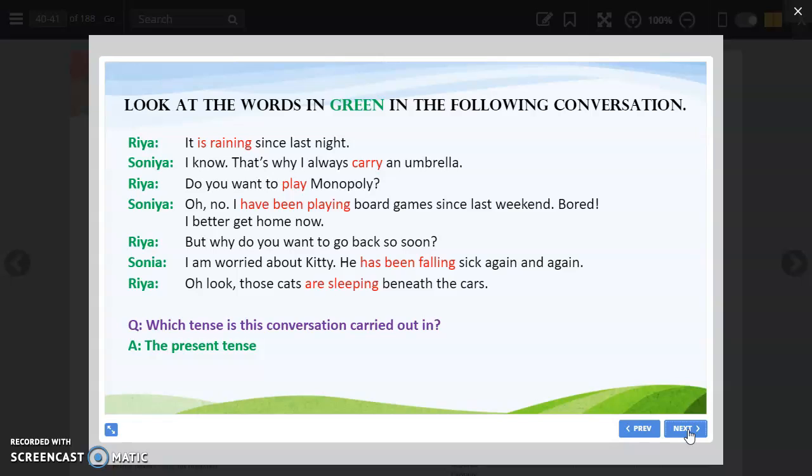So if it is happening now, it is present continuous tense. And how do you identify generally? The verb has -ing, that's how you identify. Sonia says, I know, that's why I always carry an umbrella. Now this sentence is in simple present tense.